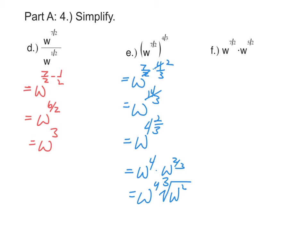If we see an exponent multiplied by an exponent with the same base, we need to add the powers. So w to the seven halves times w to the five halves — adding those two together gives us twelve halves, which ends up being w to the sixth.